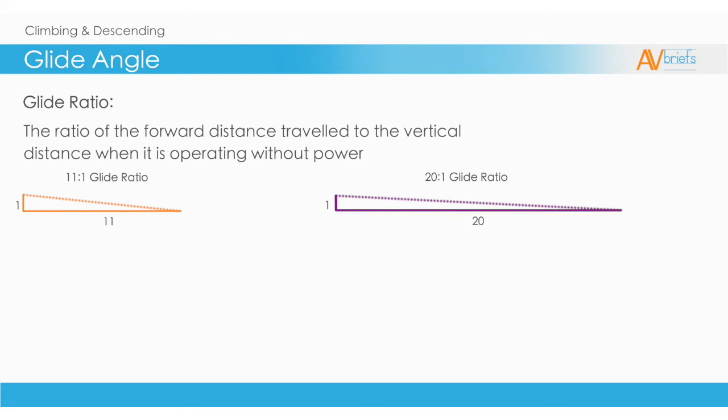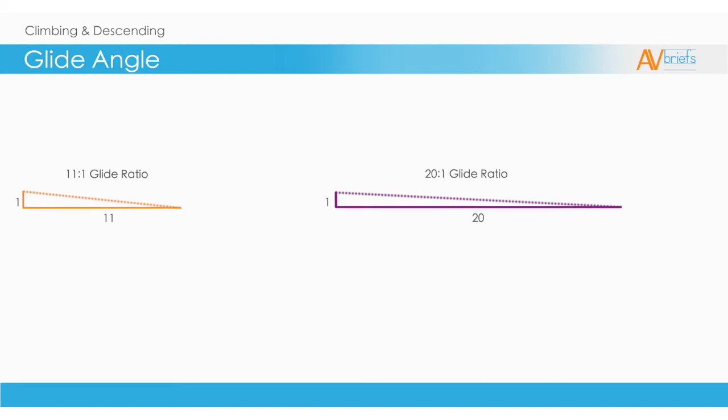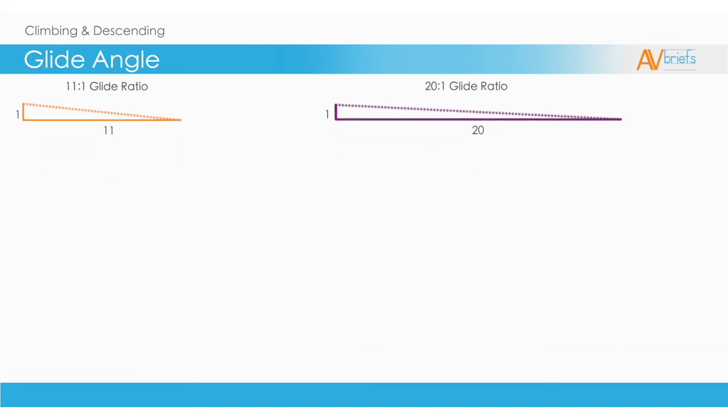So the glide ratio is an important figure, as it tells us how far we will travel if we lose engine power. The lift-to-drag ratio determines the glide angle.